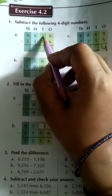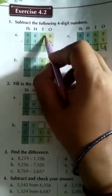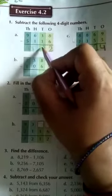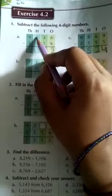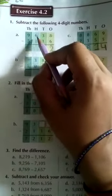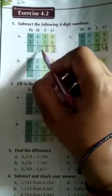Now you come in 10s place, you see here given 3 and here given 1, so 3 is greater than 1, so we can subtract. So 3 minus 1, again 2. Here in 100s place given 6 and here given 1, so 6 minus 1 is? 6 minus 1 is 5.